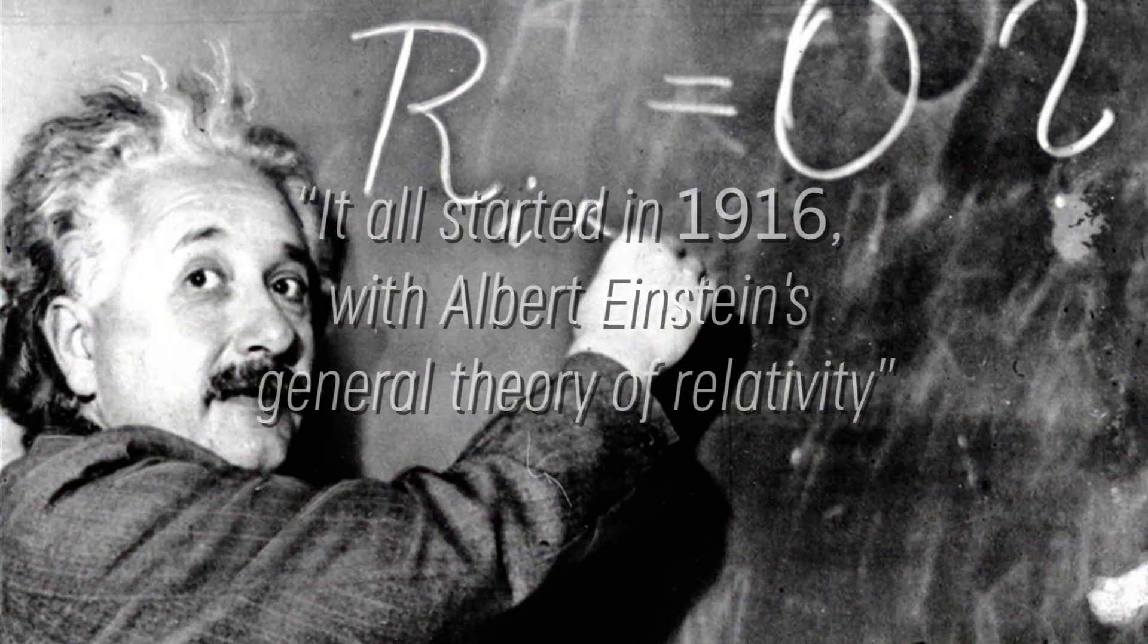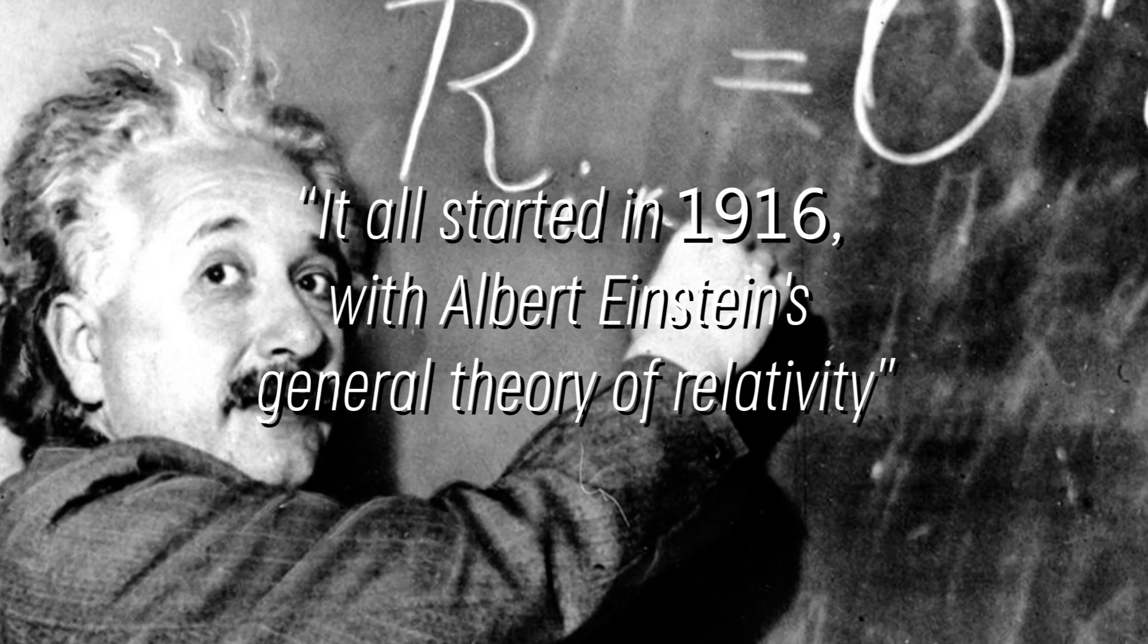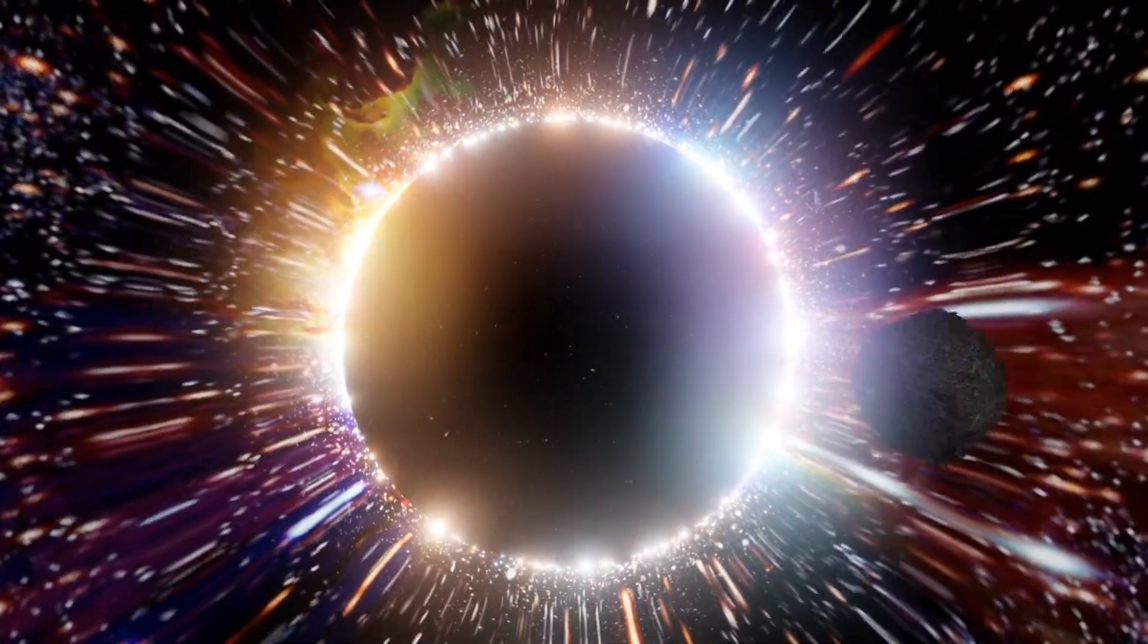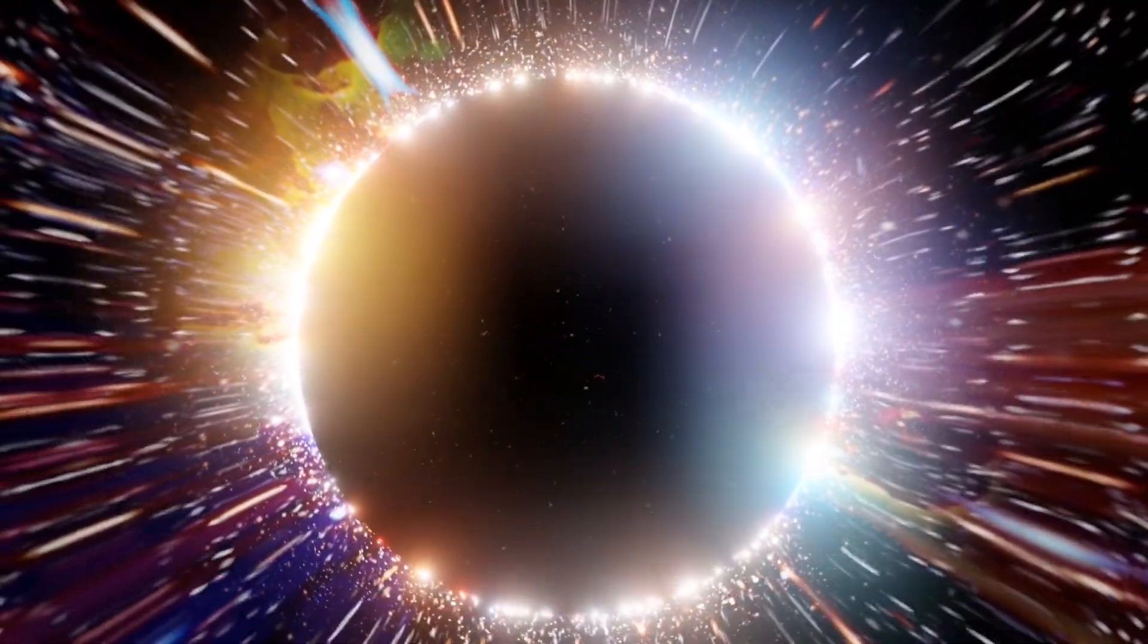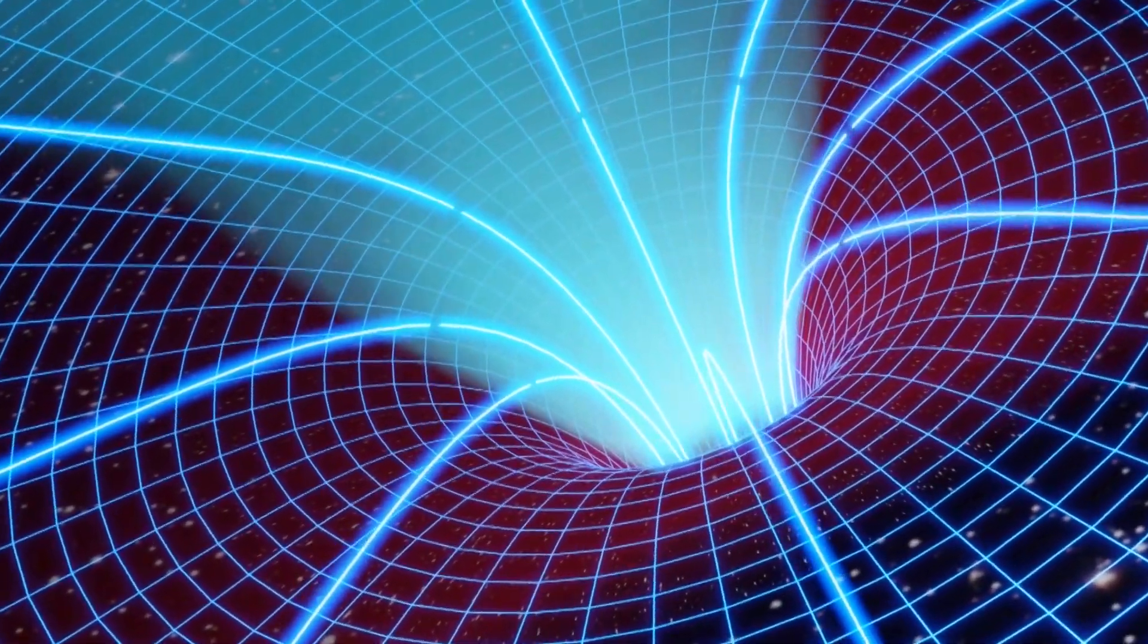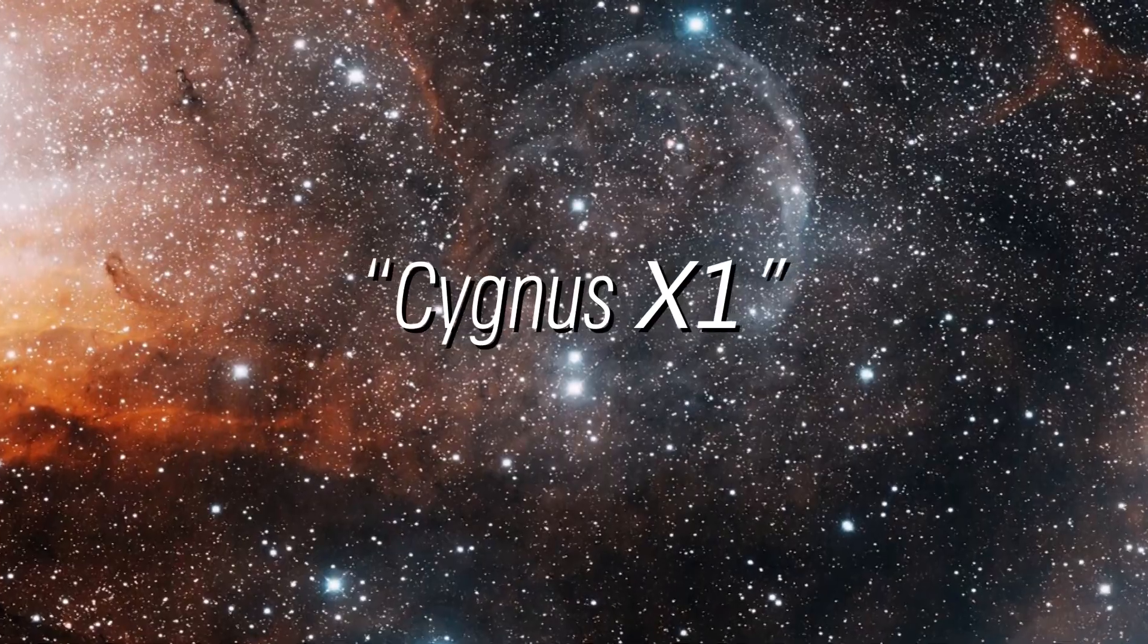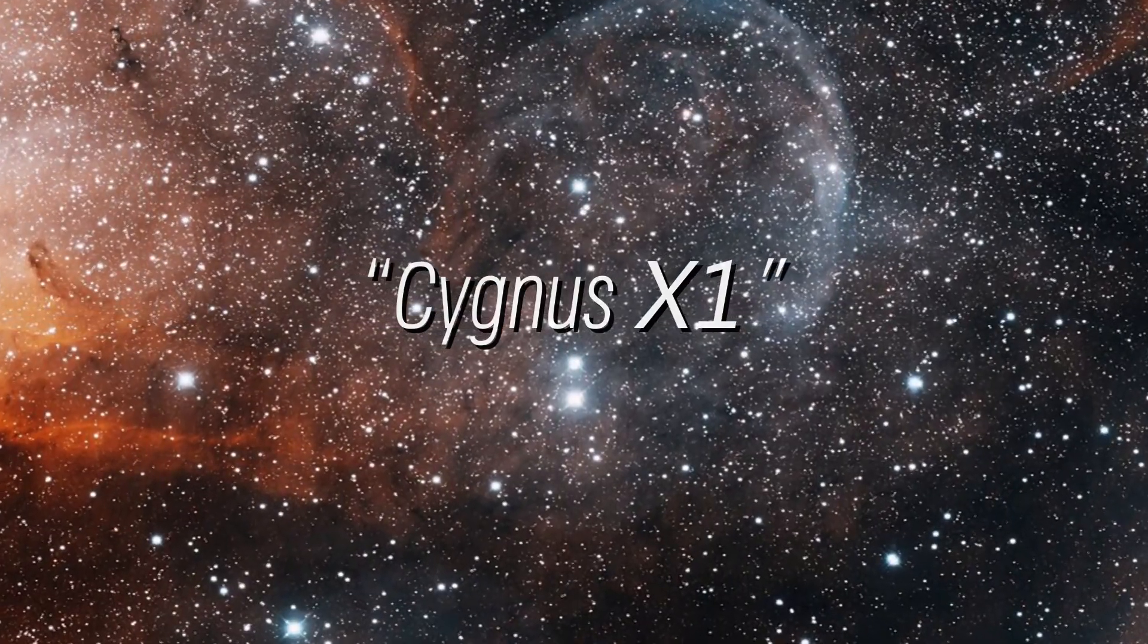It all started in 1916 with Albert Einstein's general theory of relativity, who was the first to predict the existence of these entities. Although the term black hole was officially coined 50 years later, some scientists already believed in Einstein's theory, while others dismissed it. It was in the late 1960s, when researchers were studying the constellation Cygnus X1, that they noticed something amazing.